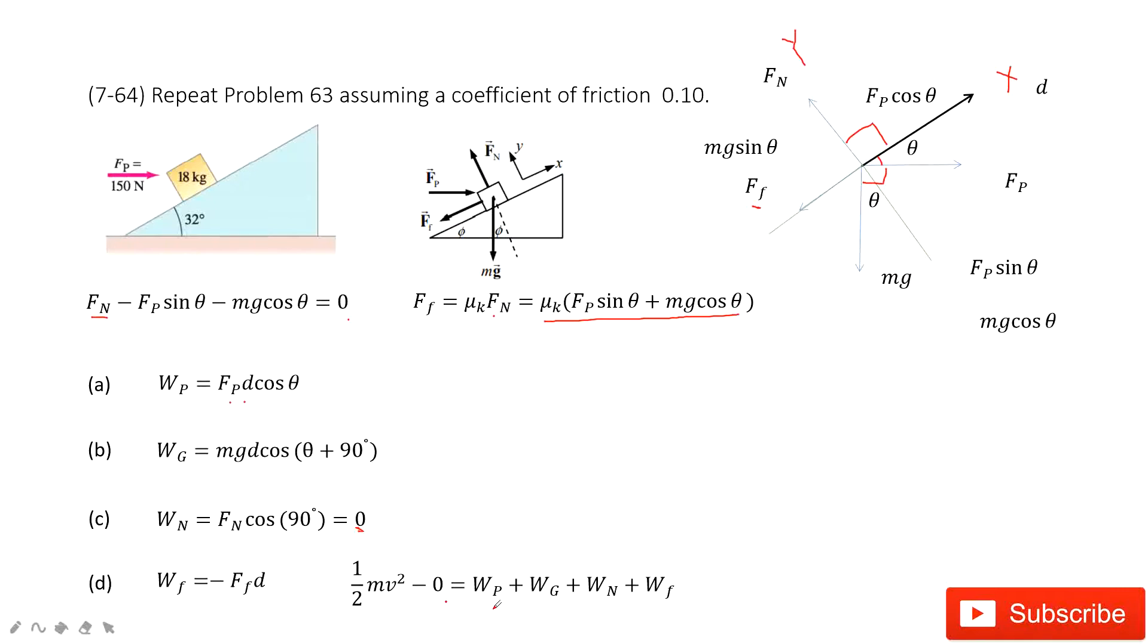The net work must include the work done by Fp, work done by gravity, work done by normal force, and work done by friction. How can we get the work done by friction? The friction is pointing to negative x, d is positive x. So there is a negative sign, opposite direction. Because friction and d are opposite directions, cosine 180 degrees is negative 1.